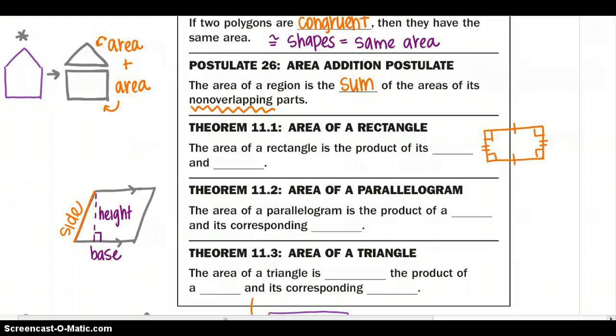Theorem 11.1 talks about our area of a rectangle. The area of a rectangle is the product of its base and its height. Again, we are looking for the perpendicular segments and our rectangle to the right. I would say this would be my base and my height. So I can take my base times my height to find my area of my rectangle.